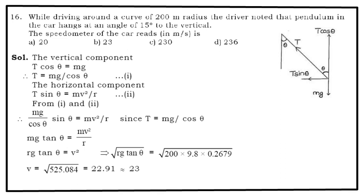You can see here, T cos θ balances the weight Mg. And if I equate that, T cos θ = Mg, so you get T = Mg/cos θ. Now the horizontal component T sin θ, which is pointing towards the center of a circular path, will provide me necessary centripetal force.